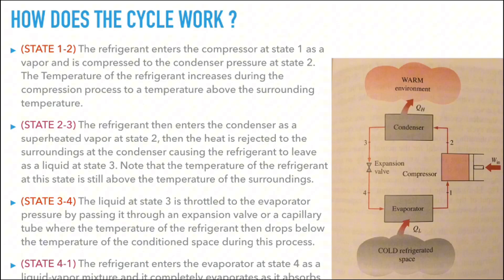Let's get right to the explanation. As we go about the transition from state one to two across the compressor, the refrigerant enters the compressor at state one as a vapor and is compressed to the condenser pressure at state two. As we compress the vapor, its temperature increases because the compression process brings the molecules together, causing them to collide more frequently, which in turn raises their temperature. The refrigerant therefore enters the condenser as a superheated vapor at state two as a result of the compression process.